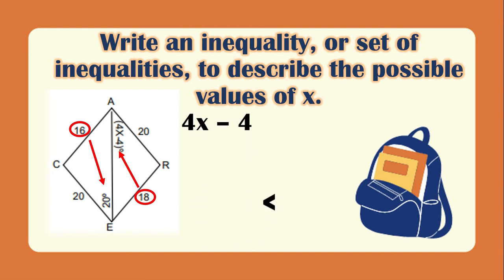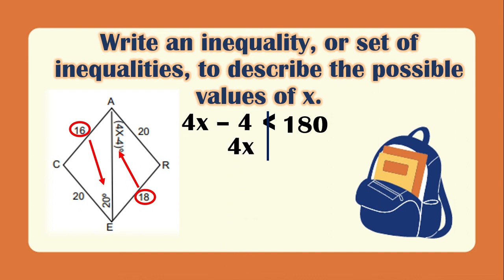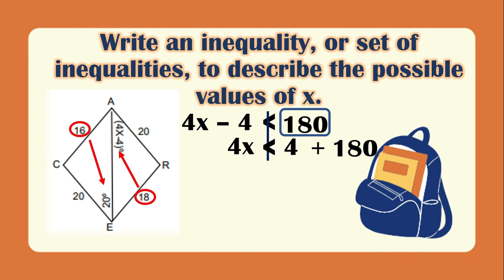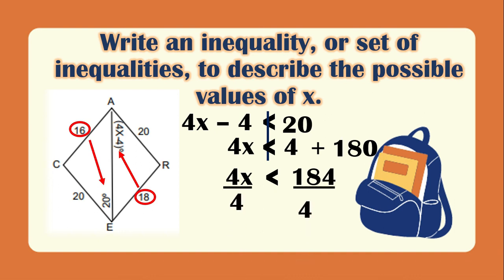For the maximum value, 4X minus 4 must be less than 180 degrees, since an angle cannot exceed 180 degrees. Transposing gives 4X less than 180 plus 4, which is 184. Dividing both sides by 4 gives X less than 46. So the values of X should be greater than 6 but less than 46.